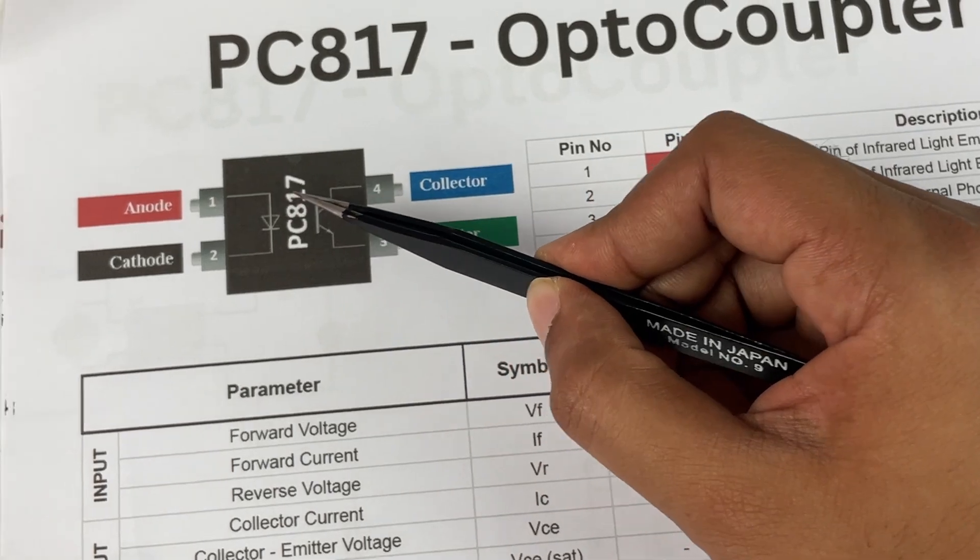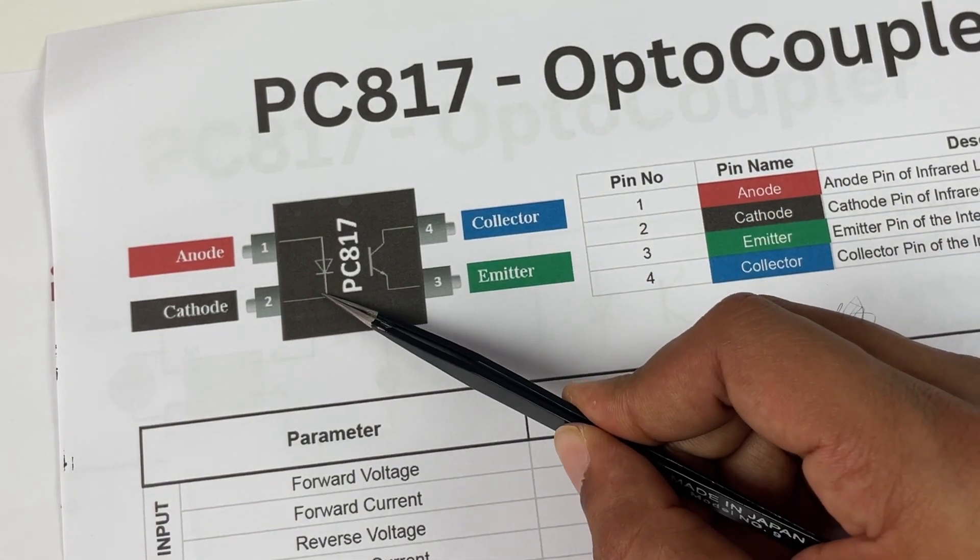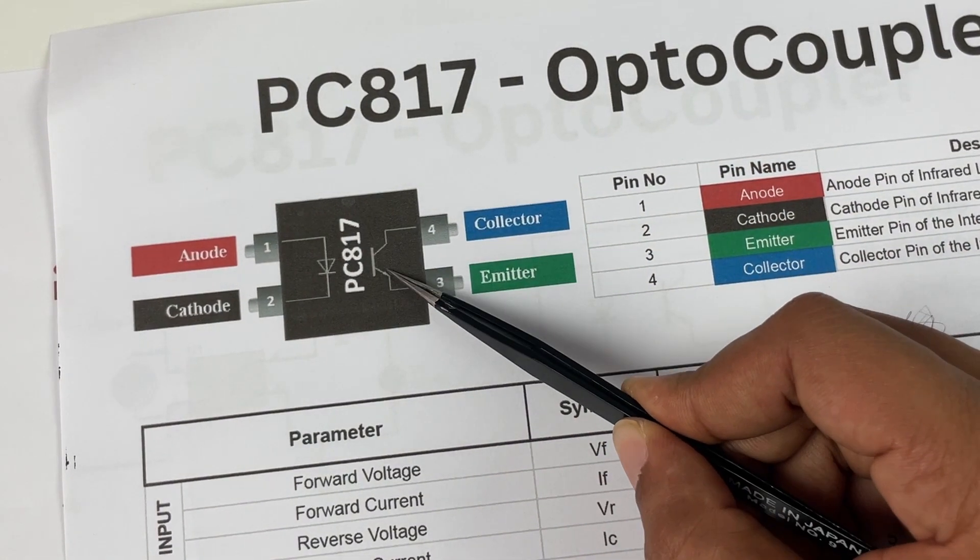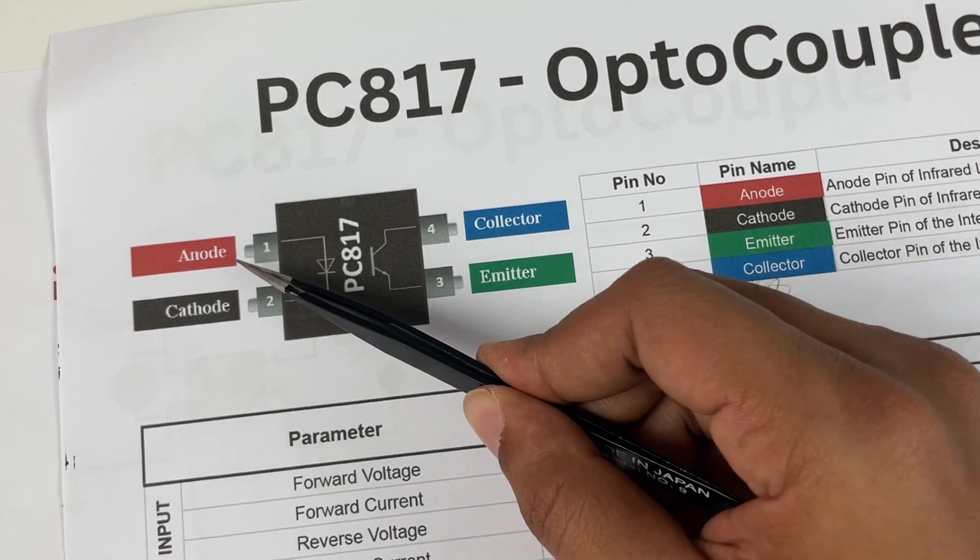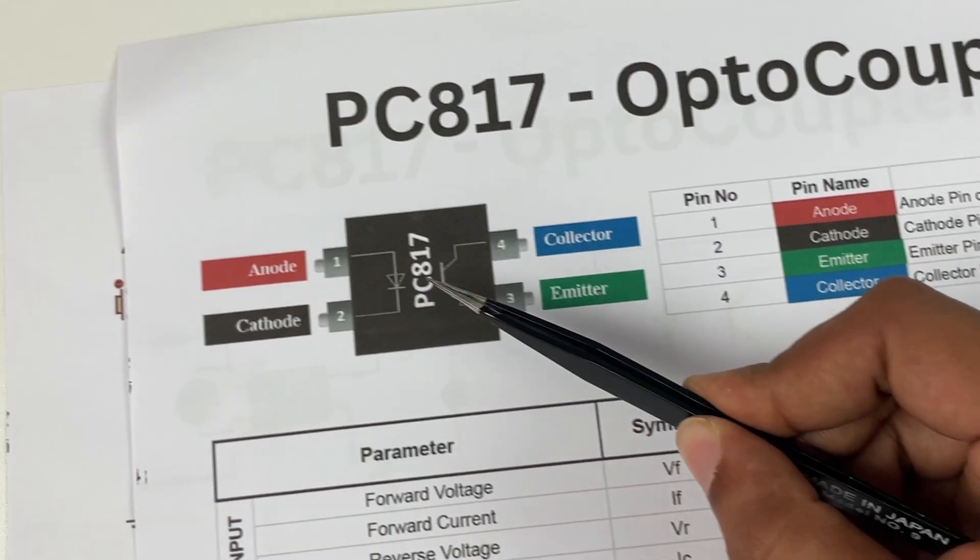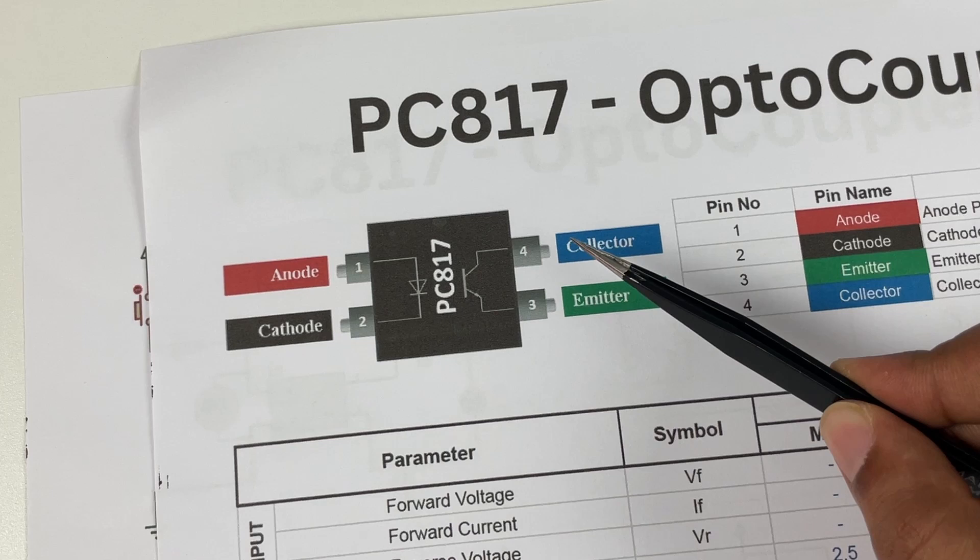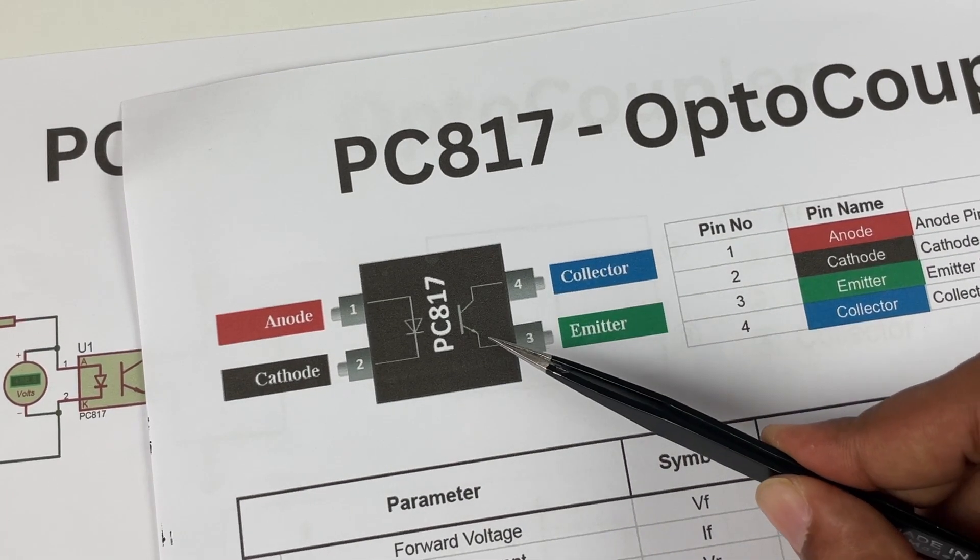Like I told earlier the optocoupler just has a diode, an LED diode, and a transistor without base pin. So all the pins we get are the anode and cathode from the diode and the collector and emitter pin from this transistor.